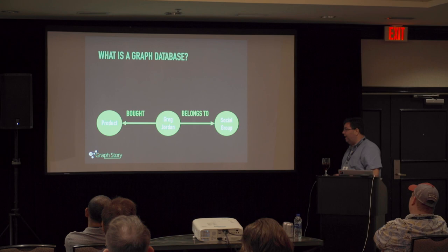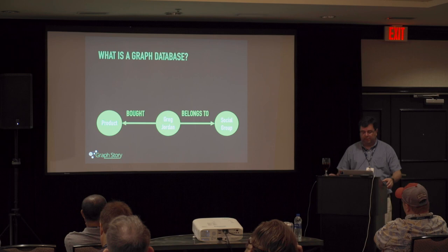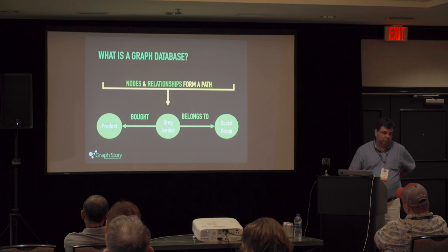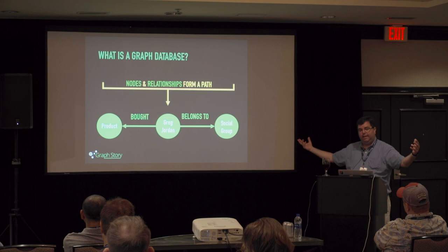So what is a graph? A graph is essentially a path of relationships between vertices and their edges — or nodes and relationships, as they're sometimes called. That's the most popular way to describe the dots and lines. This is a node, those are nodes, there's a relationship here and there. The whole thing forms a path. I'm in the center — I bought a product and I belong to a social group. You can derive some understanding from that relationship.